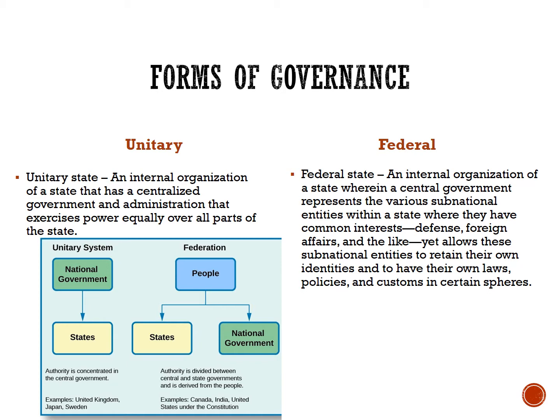Both systems administer the day-to-day operations of governing with sovereignty, and the national government is the final authority. But in a unitary system, the state has a centralized government and administration that exercises power equally over all parts of the state. Basically, the central or national government holds all the power; the sub-national units don't really get much power.